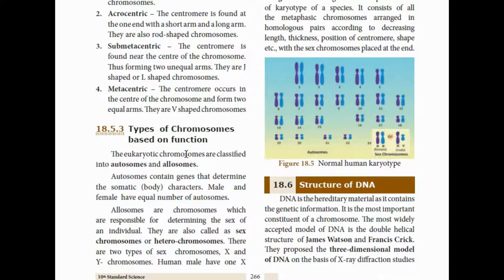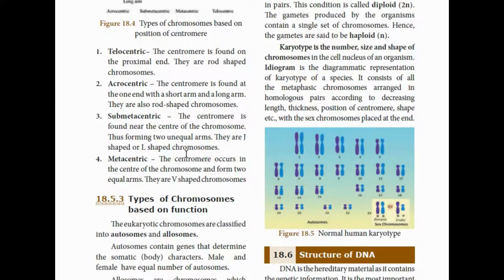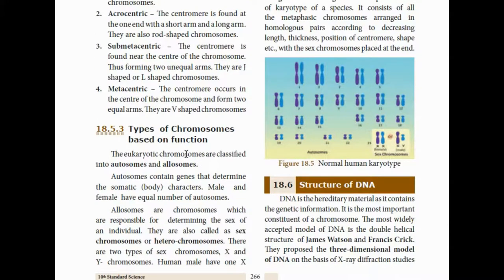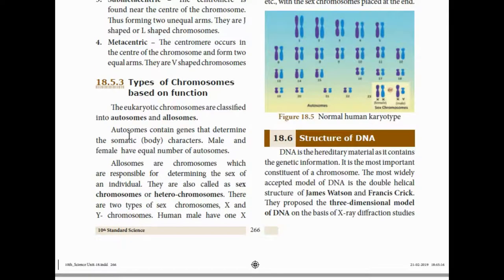Next, types of chromosomes based on function. Based on centromere position we classified as telocentric, acrocentric, submetacentric, and metacentric. Based on function, chromosomes are classified into two types: autosomes and allosomes. Autosomes contain genes that determine somatic characters — the body characters. Both male and female have an equal number of autosomes.